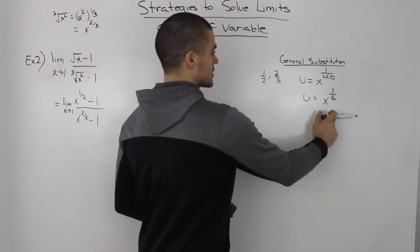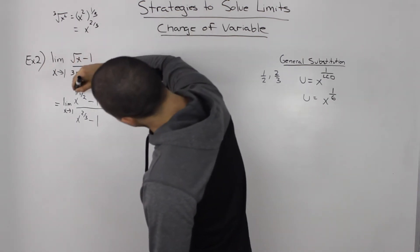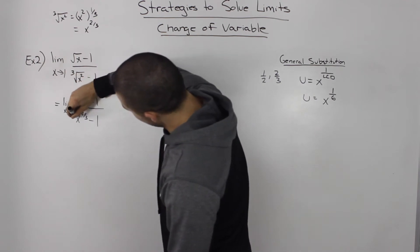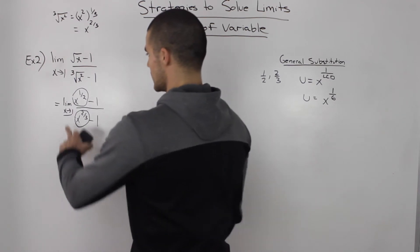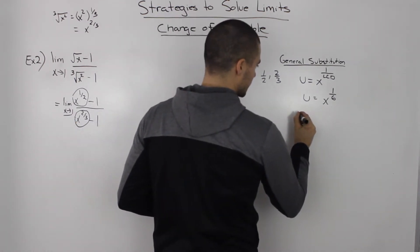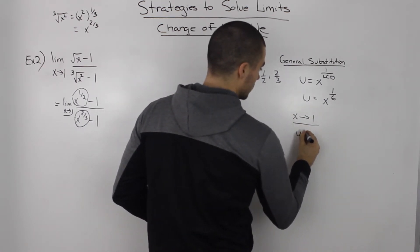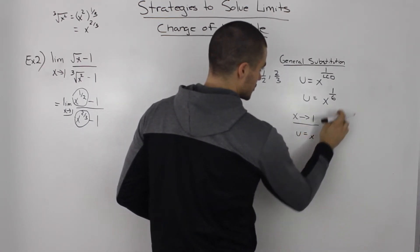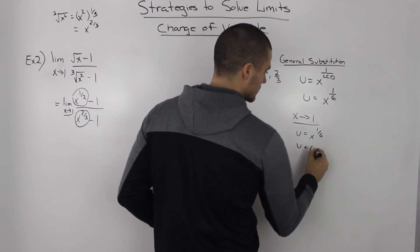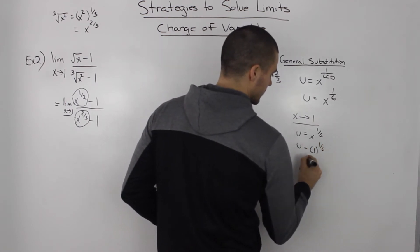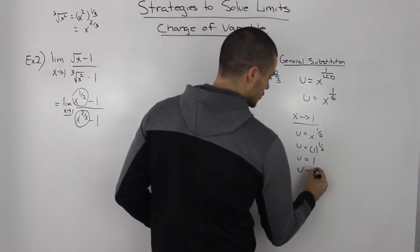So we've got our general substitution. Now we need to make substitutions for x^(1/2), x^(2/3), and the limit condition as x goes to 1. Let's start with as x goes to 1. We write out our general formula: u = x^(1/6). Sub in 1 for x and we get u equals 1. So as x approaches 1, that's equivalent to u approaching 1.